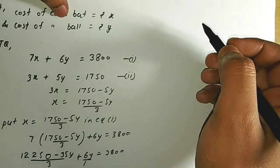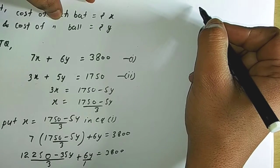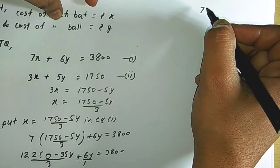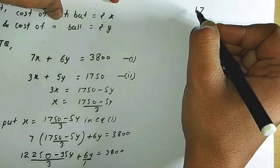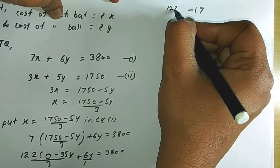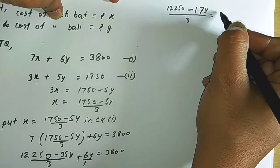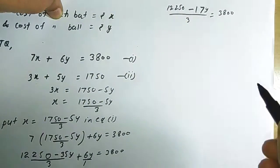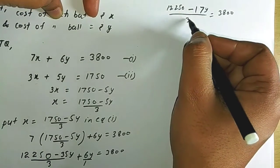So this gives us 12250 − 35y + 18y upon 3 = 3800. Now 35 minus 18 is 17, so we get (12250 − 17y) / 3 = 3800. Now I will find the value of y, so I will take the 3 to the other side and divide.